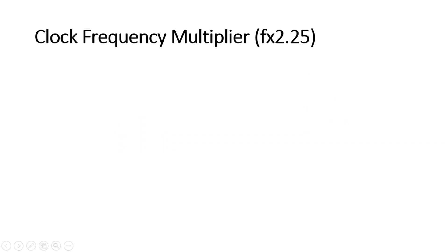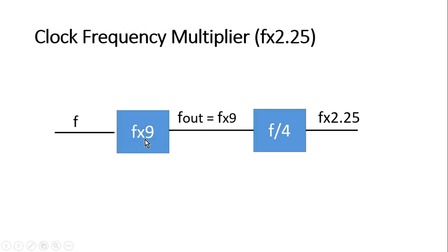Our next design challenge is to multiply the input frequency by 2.25. The design is: I use a frequency multiplier to multiply the input frequency by 9, giving F × 9 at its output. Then I use an F÷4 clock frequency divider. So 9÷4 = 2.25, which is my expected output.